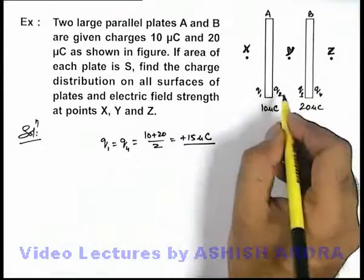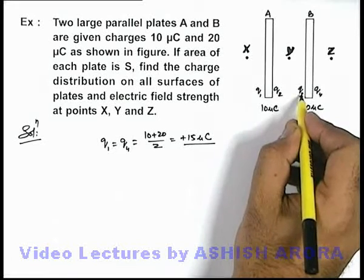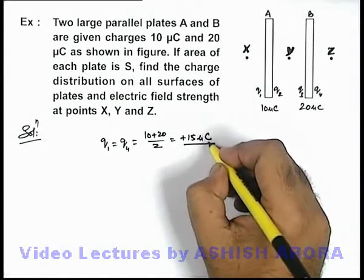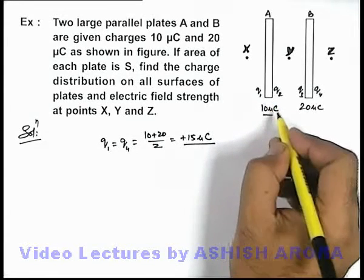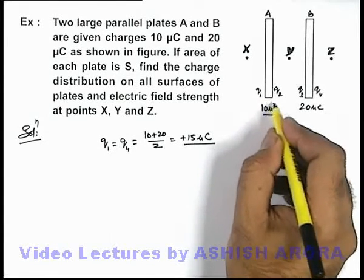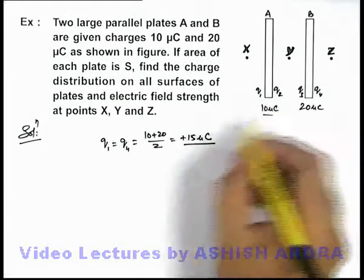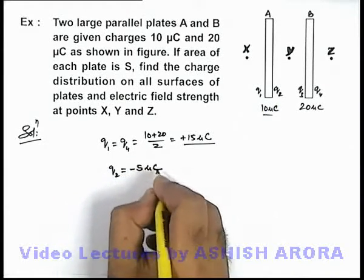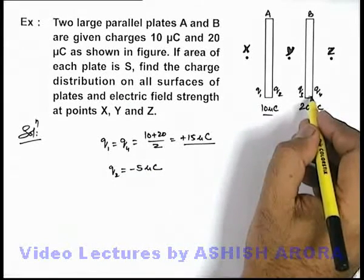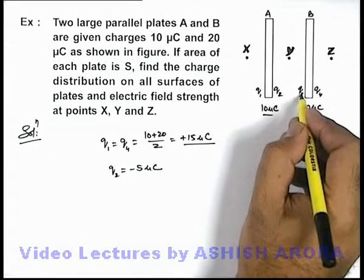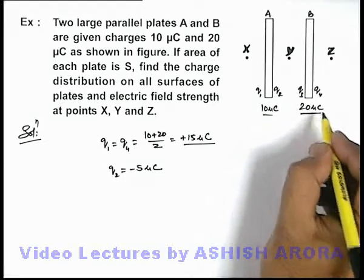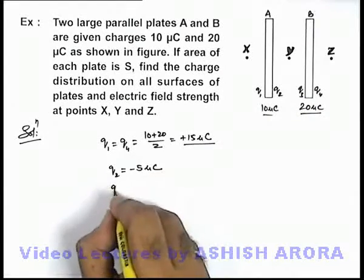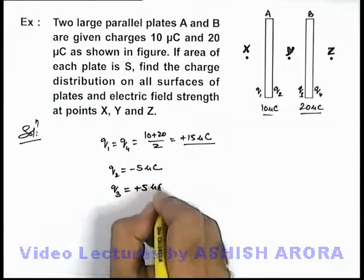Q2 and Q3 must be equal and opposite. If Q1 is +15 micro coulomb and the total charge on plate A is 10 micro coulomb, then by conservation of charge, Q2 must be equal to -5 micro coulomb. Similarly, on the other plate, the total charge on plate B is 20 micro coulomb and Q4 is +15 micro coulomb, so Q3 will be +5 micro coulomb.